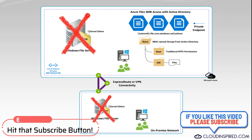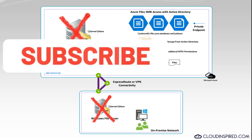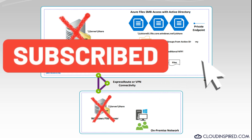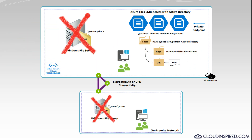The private endpoint allows connections using a secure private IP address from within the address space of your virtual network. Users can then connect to Azure file shares from on-premise using either a VPN or ExpressRoute with private peering. We will also show how to block all public connections to the public endpoints, which disables access to the Azure file shares via SMB over the internet using port 445.